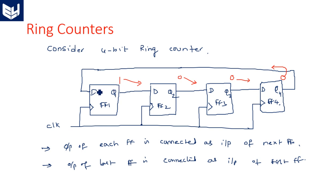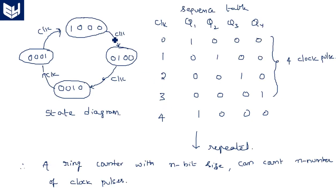There are two important points: first, the output of each flip-flop is connected as the input for the next flip-flop, and the output of the last flip-flop is connected as the input of the first flip-flop. With these two points we can construct a ring counter. The sequence table shows how many clock pulses it takes to count or to repeat the state.